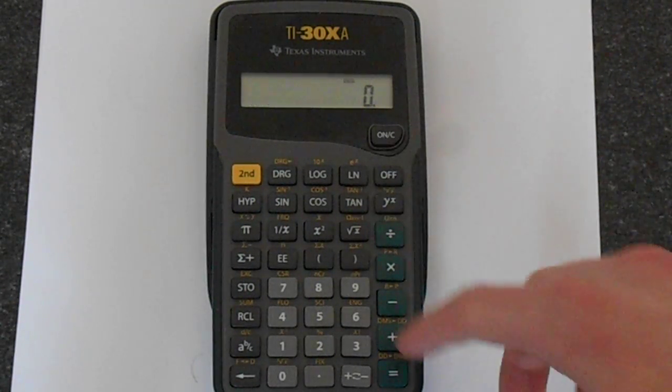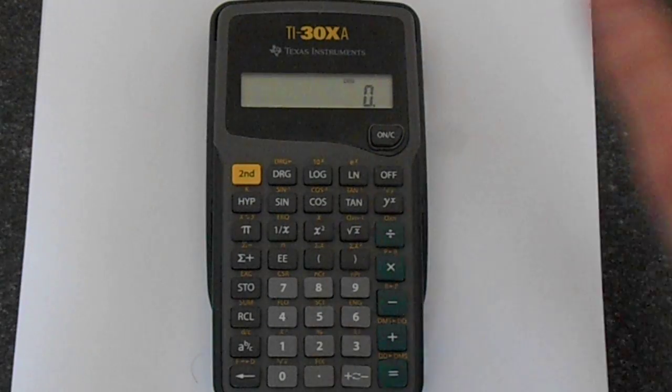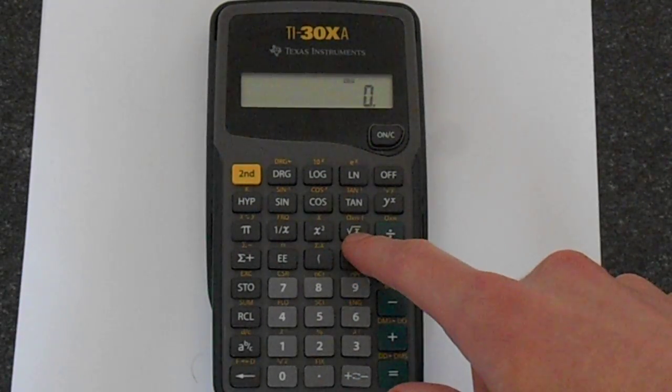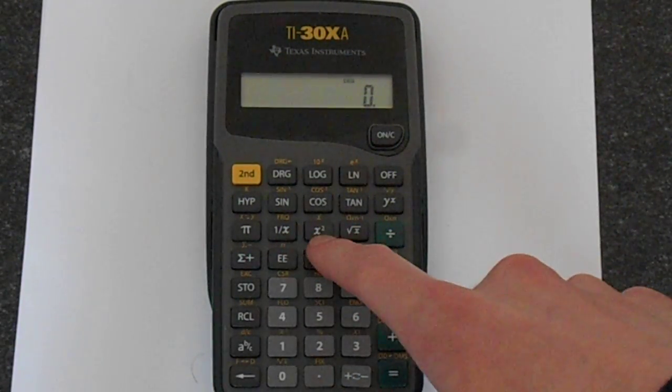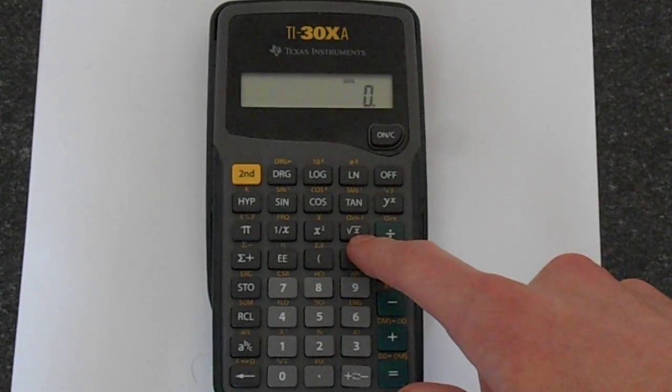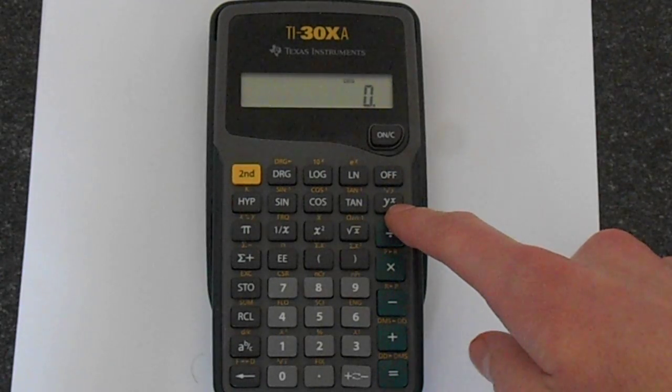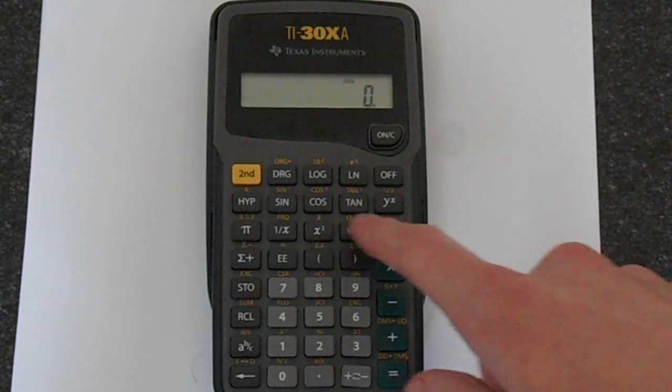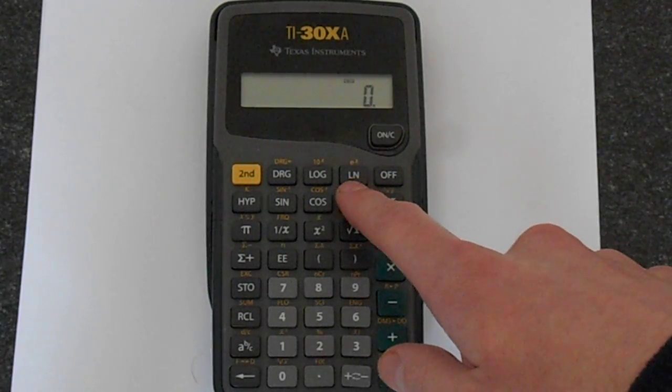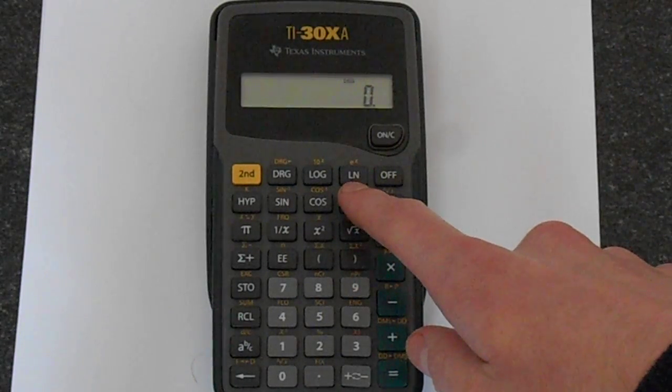So there you have it. That's how to do the basic powers. Just to recap, these are your quick functions: power minus 1, squared, and the square root is the power of a half. For any other power you're using y to the x. And you also have the exponential, which is the second function on the ln or natural logarithm button.